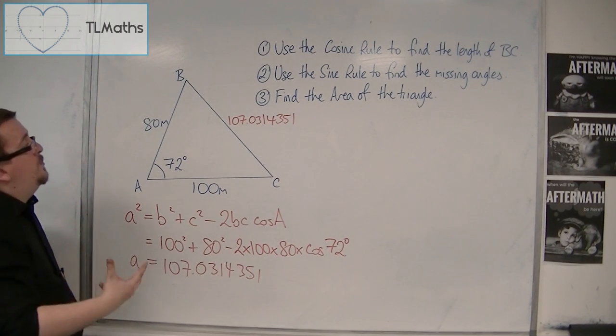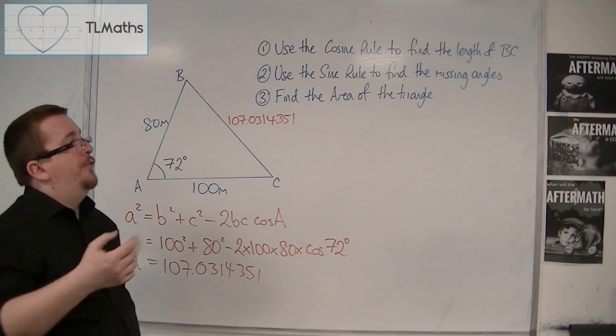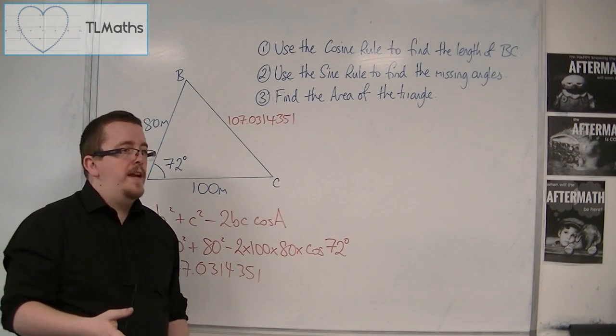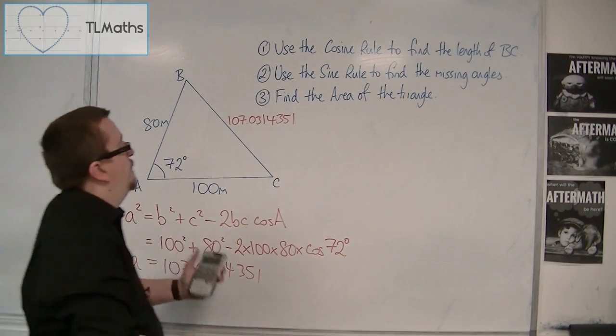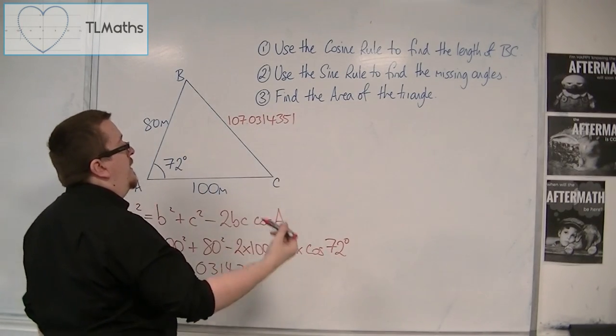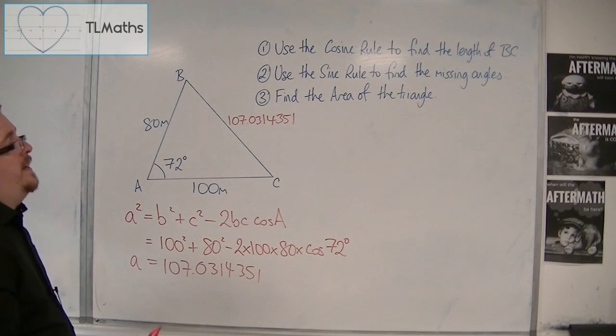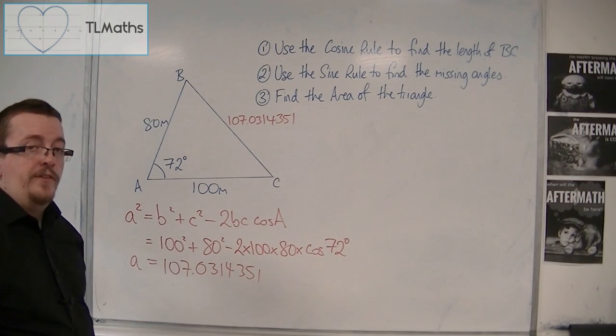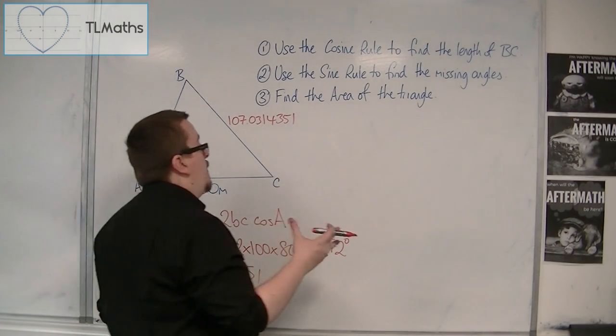So, for part 2, use the sine rule to find the missing angles. Now, the sine rule is either written as a over sine a equals b over sine b equals c over sine c, or it's the other way round.